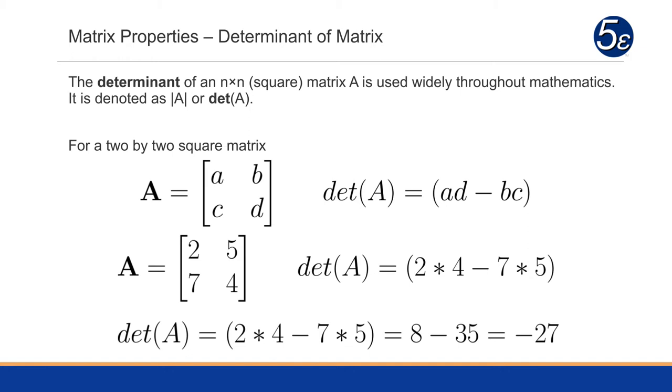So in the case here, where we have a matrix A with entries 2, 5, 7, 4, the determinant of A is going to be equal to 2 times 4 minus 7 times 5. And so therefore, the determinant of A is going to be 8 minus 35, or negative 27.